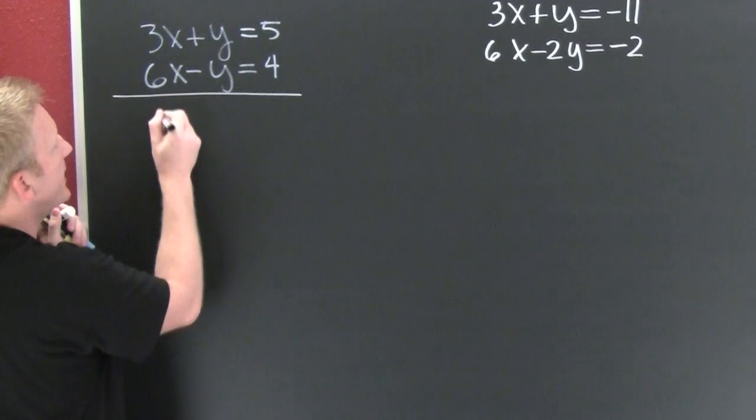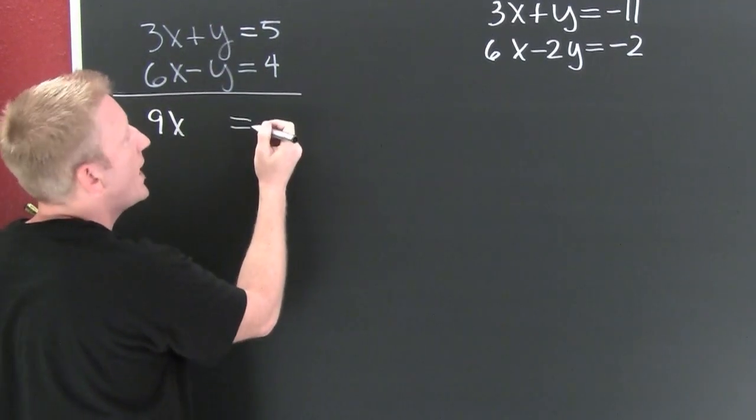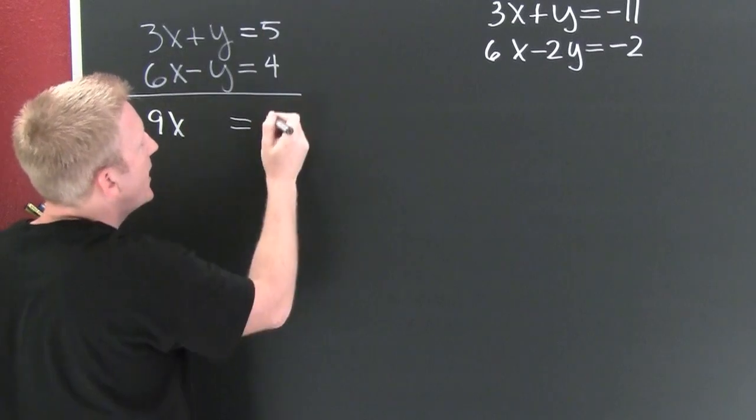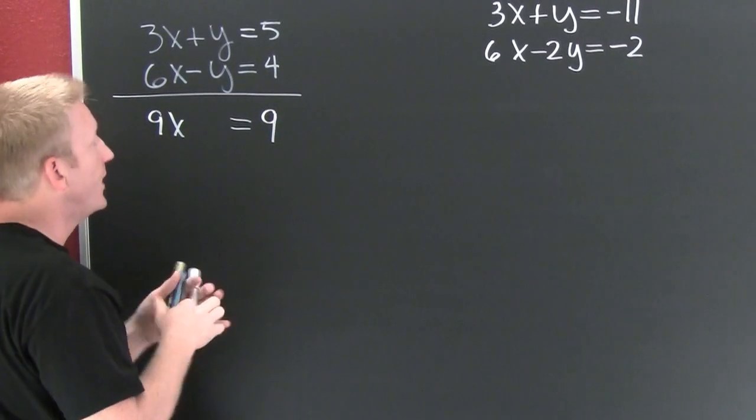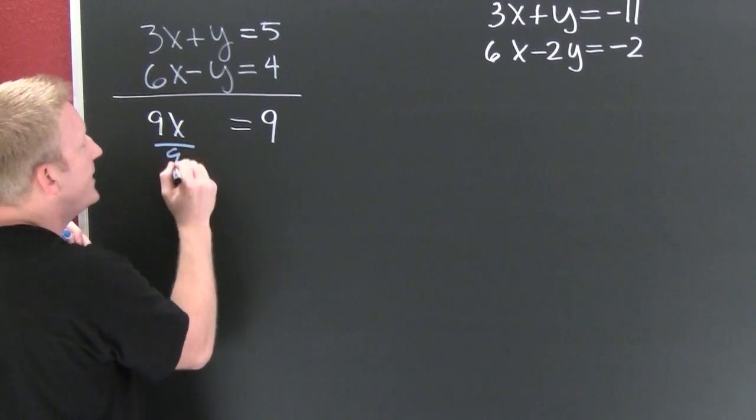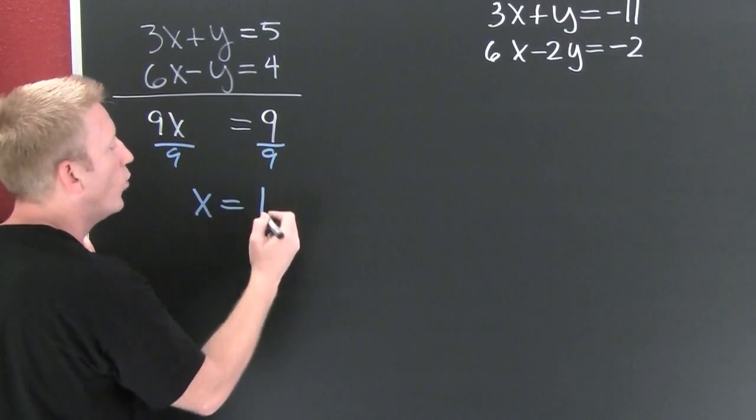So now that we have additive inverses, we can add them. Straight on down. Six and three, that gives me nine. x, y, and minus y gives me no y. The desired effect. And then this is nine. Fine. Finish him. I want to divide both sides by nine. This side by nine, that side by nine. And it turns out my x is gonna be one.